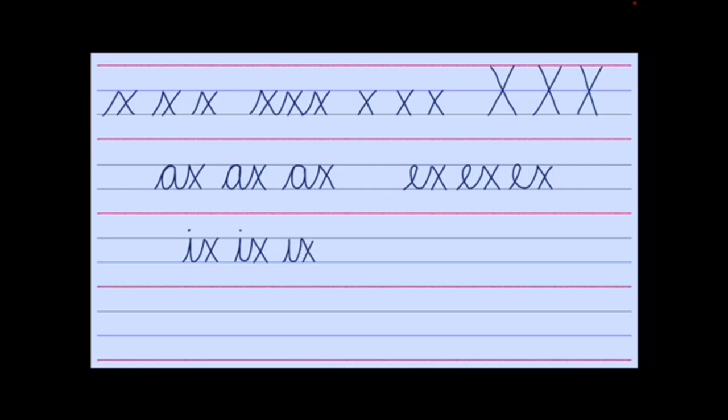And again. The letter O. The letter O is a little bit different because it is a top joiner. Round, round. And we go across before we slope down.